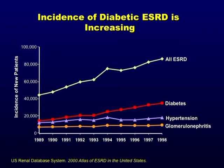Hypertension is number two and glomerulonephritis is number three. This data is from 1998, but if you take it another 10 years, these curves continue to deviate and diabetes is an even more common cause of end-stage renal disease in the United States. People come every year and say 'you showed that slide, I got that in the boards.' It's an easy question.